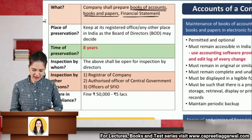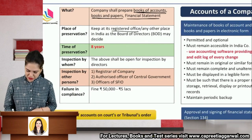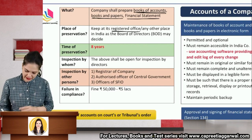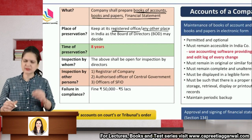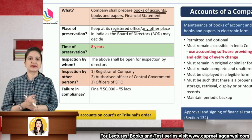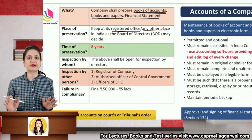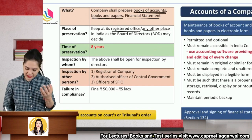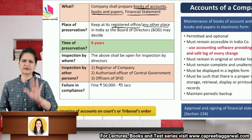Maintenance of books of accounts: books shall be kept at the registered office of the company. However, the board of directors may keep them at any other place they decide. The only requirement is that you inform the ROC within seven days about the place where the books of accounts are being kept.